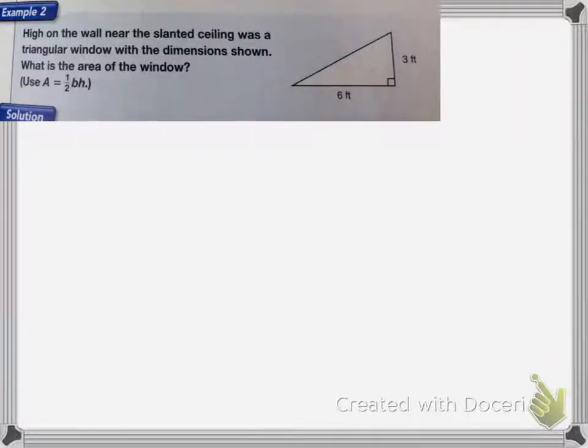High on the wall near the slanted ceiling was a triangular window with dimensions shown. What is the area of the window? This time it wants us to do 1 half times the base times the height, which is the same as base times height divided by 2. It's just another way to write it. So here I'm going to have 1 half times my base, which is the bottom, which is 6, times my height, which is perpendicular, which is the 3.